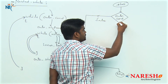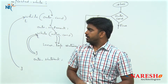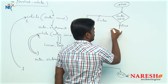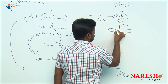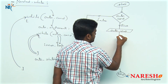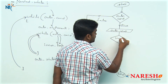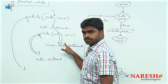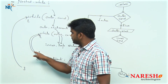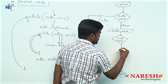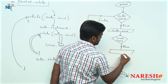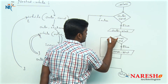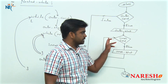Suppose if the outer condition is true, then the control moves inside and it will execute all the outer statements, then it will check the inner condition. First it will print all the outer statements, and then it will check the inner loop condition. For the inner condition also two options exist: true or false. If the inner condition is true it will execute the inner loop statements, and again it will repeat the inner while loop only — as long as the inner condition is true.